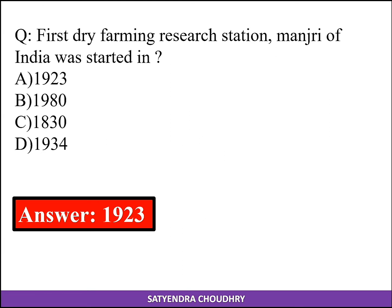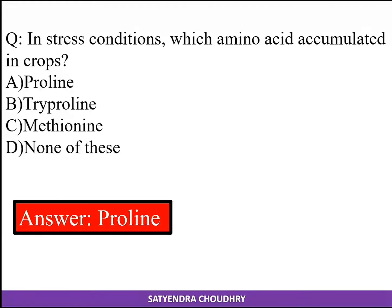The first dry farming research station in India, Manjari, was started in 1923. Under stressed conditions, the amino acid accumulated in crop plants is proline.